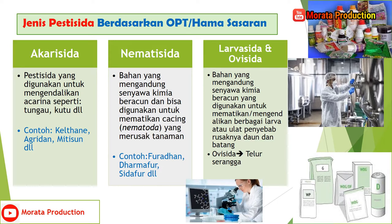Dan yang terakhir, kesembilan, yaitu larvasida dan ovisida. Larvasida adalah bahan yang mengandung senyawa kimia beracun yang digunakan untuk mematikan atau mengendalikan berbagai larva atau ulat penyebab rusaknya daun dan batang. Sedangkan ovisida adalah bahan kimia beracun yang digunakan untuk mematikan telur serangga. Pada gambar ada contoh ilmuannya dan juga kemasan produk pestisida.